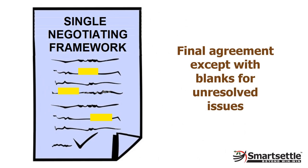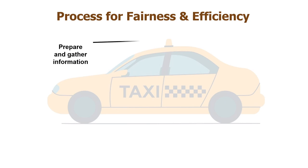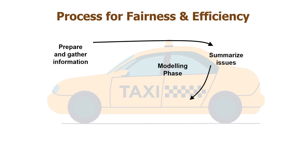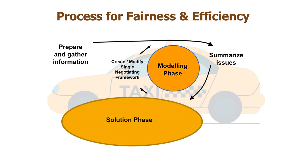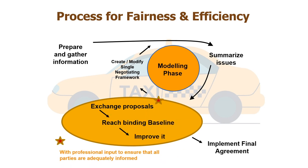The first task of the parties is to work together to build a Single Negotiating Framework, or SNF. The SNF is like the final agreement, except for blanks representing issues to be negotiated. Creation of the SNF is usually an iterative process that the parties may even return to after they begin exchanging proposals, but it must be complete before the parties reach a baseline, in order to legitimize the final improvement step and produce a final binding agreement.